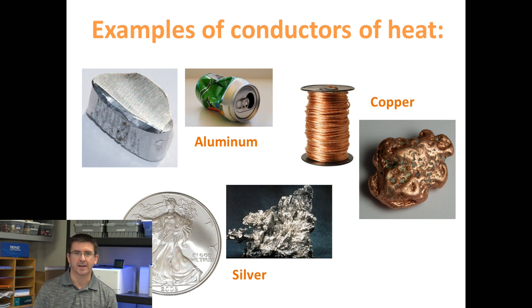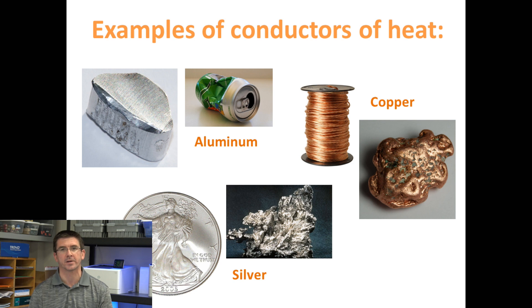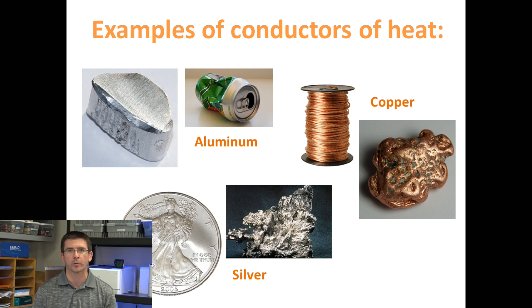If I take an iron pan and sit it on the stove, it's going to get hot quickly. A lot of the time you'll make cookware and things like that out of conductive materials because we want them to be able to warm up easily and heat quickly.